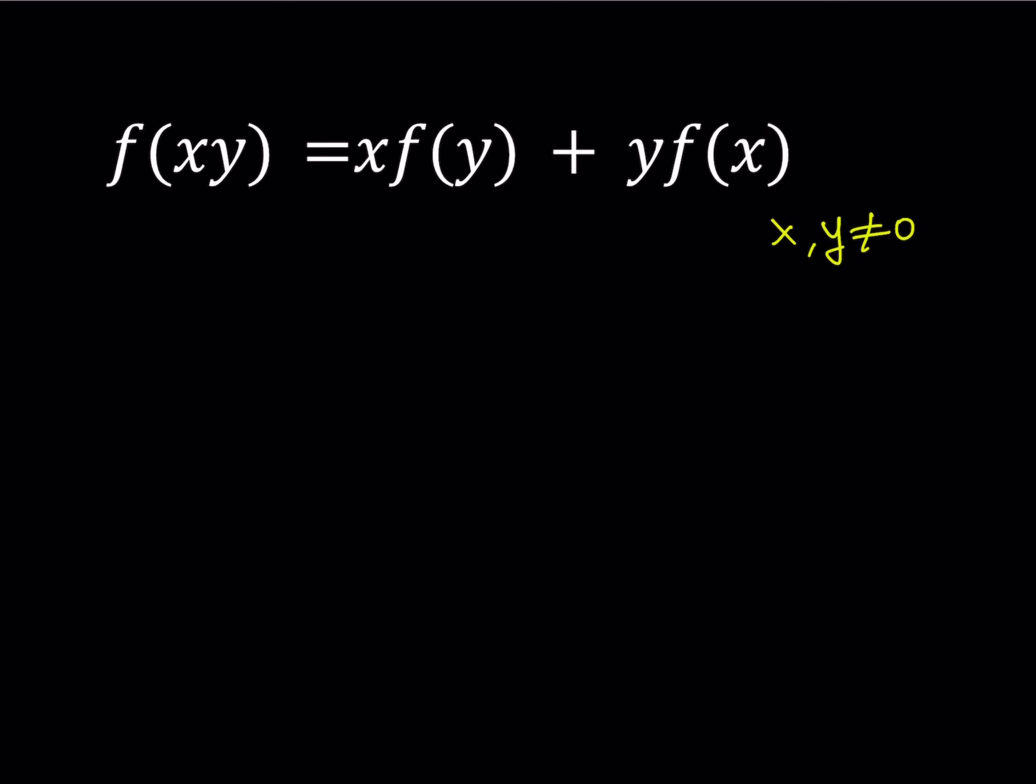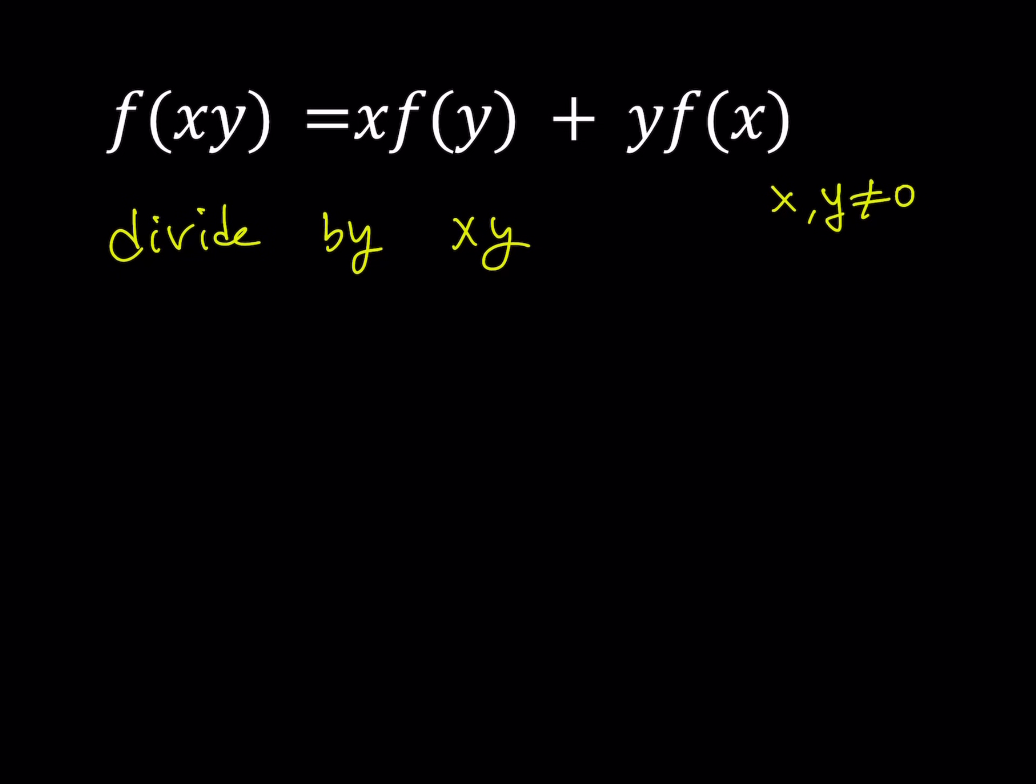Alright. So, here's what I'd like to do. Since x and y cannot be 0, in this case, because of the limitations, I'm going to divide both sides by, divide by, x, y. And why? Because x, y is fun, right? Let's divide both sides by x, y. That's going to give us something real cool.